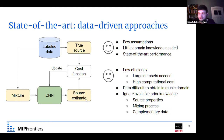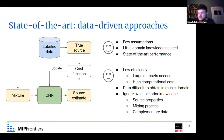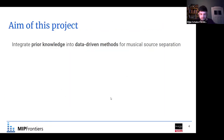At the same time, data-driven methods ignore some knowledge that we already have. For example, we might know how these sources look, that in music most sources are harmonic, how these sources have been mixed together, or we might even have complementary data such as a musical score or lyrics transcript — something that tells us about the sources we want to estimate. This is not currently used, and this is the motivation of my project.